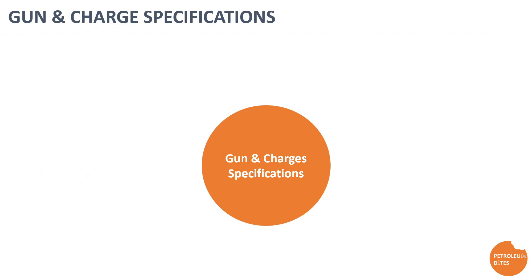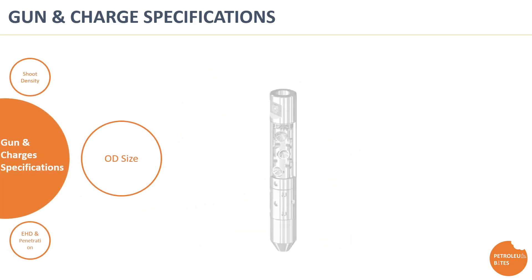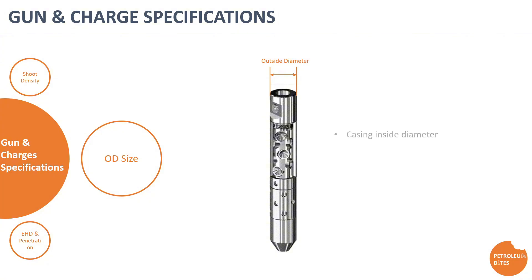Moving on to gun and charge specifications: there are five main specifications used to select the optimum perforation gun for the required application. These are the outside diameter of the gun, the shooting density, the charge phasing, the type of explosives, and finally the entrance hole diameter and penetration of the created perforation. The gun size is decided based on the inside diameter of the wellbore and the casing through which the gun is running. In some applications it may be needed to run through a tubing string with a much smaller inside diameter — this is called through-tubing perforation.